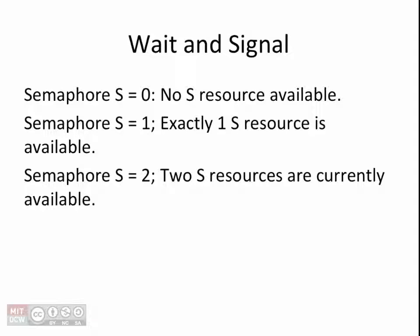You can think of a semaphore as a shared resource that is limited in quantity. If we have a semaphore S that is initialized to zero, then it represents the fact that currently resource S is not available. If S equals 1, then that means exactly one S resource is available for use. If S equals 2, then there are two S resources available, and so on.